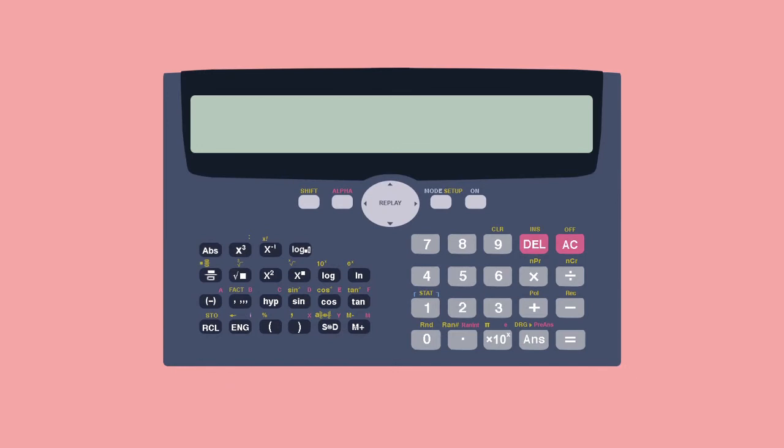So we're going to start this by pressing Mode and then select Stat. Next we're going to press 1 for Standard Deviation and Variance.